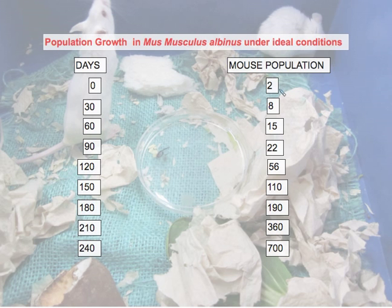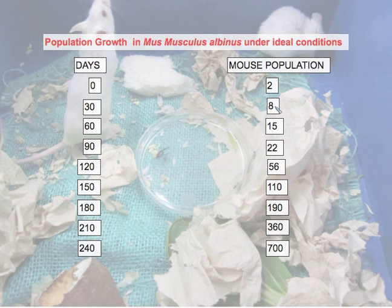With one mouse litter having six to seven offspring, we can track how the mouse population in the lab might grow under ideal conditions. Beginning at day zero with two mice, by day 30 we would have about eight mice, and after 60 days about 15. At 90 days the population would rise to about 22 mice, and at day 120 the females born on day 30 would be ready to reproduce — causing a sudden jump in population.